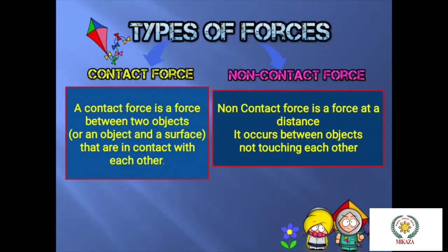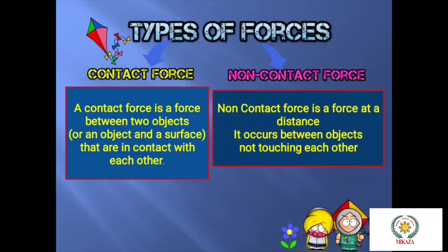The other type of force is non-contact force. Non-contact force occurs between objects that are not touching each other. For example, if we drop a ball from above, the ball automatically falls to the ground. This is because of the force of gravity. Gravity does not need to touch the body to pull it toward the ground.